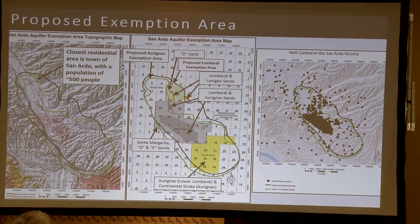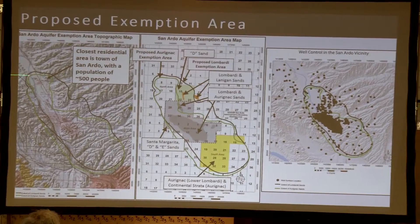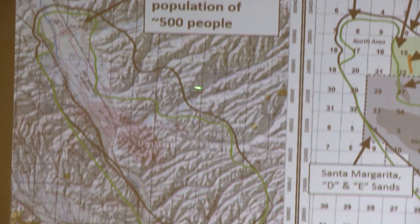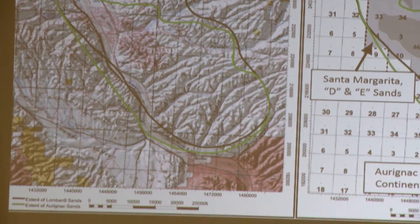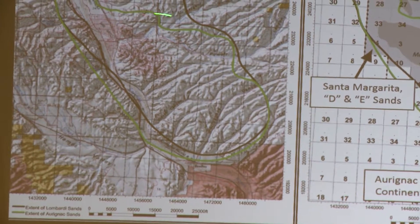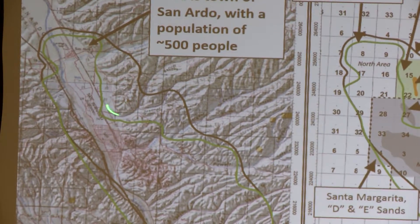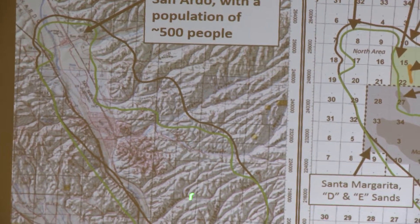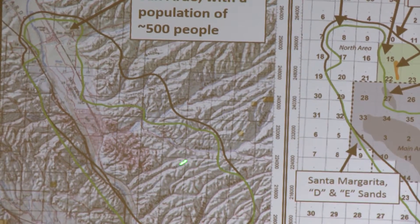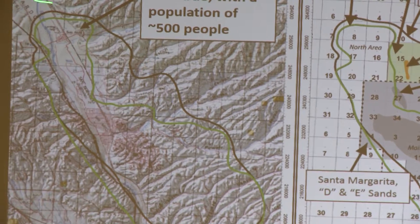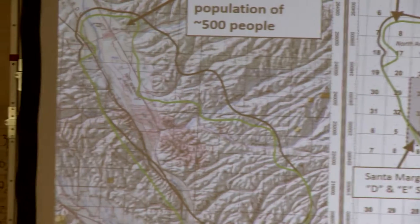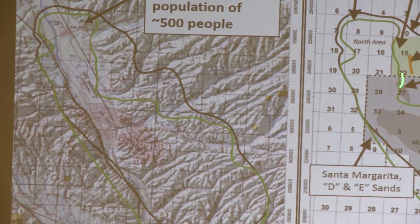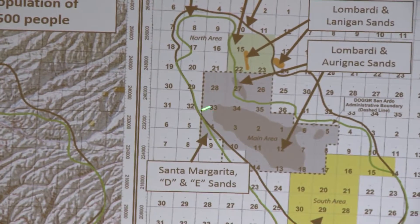There are three maps shown on this slide. Starting from the left, we see the proposed aquifer exemption boundaries. The bold black line shows the proposed boundaries for the Lombardia sands, and the green line shows the proposed boundaries for the Aranac sands. These boundaries show the geologic limits of these formations, superimposed on a shaded relief map. You can still see the Salinas River Valley running northwest. Here are those same boundaries superimposed on townships, sections, and ranges, which are surveying units.